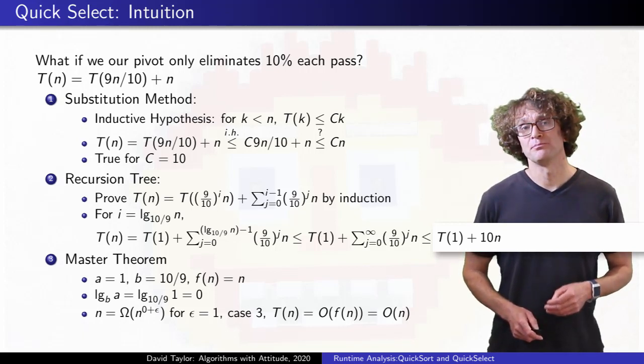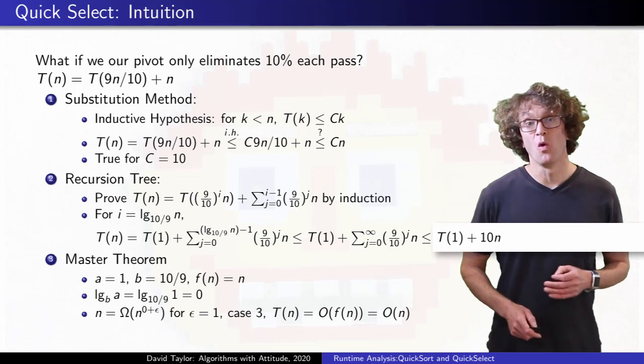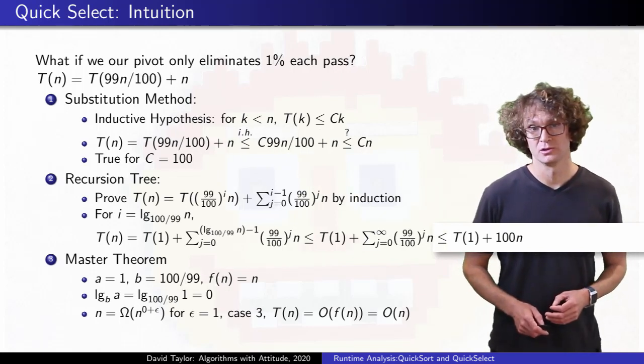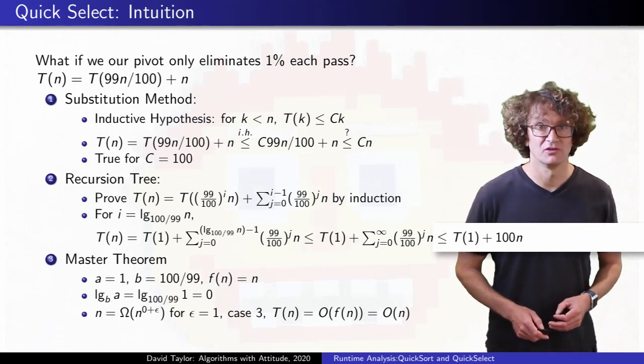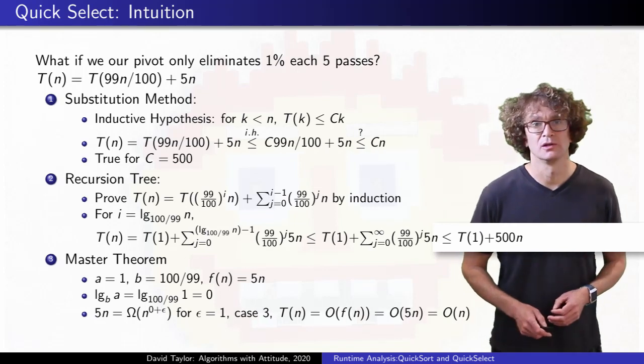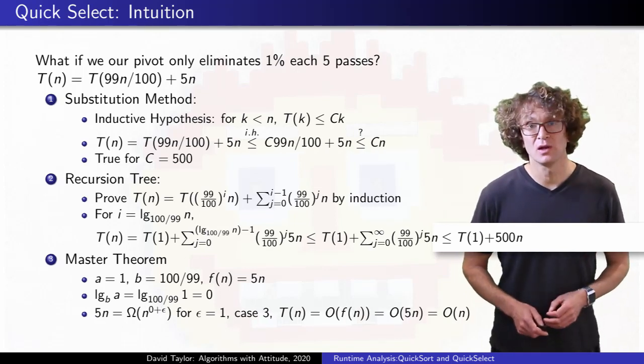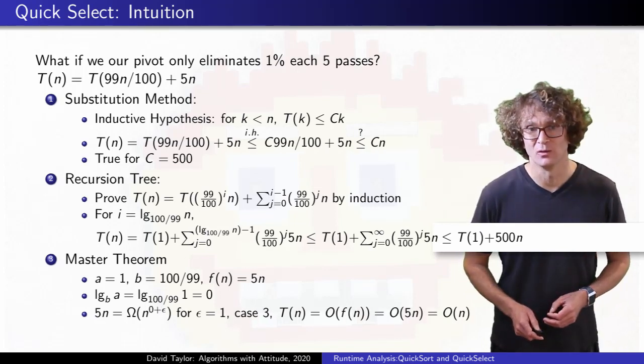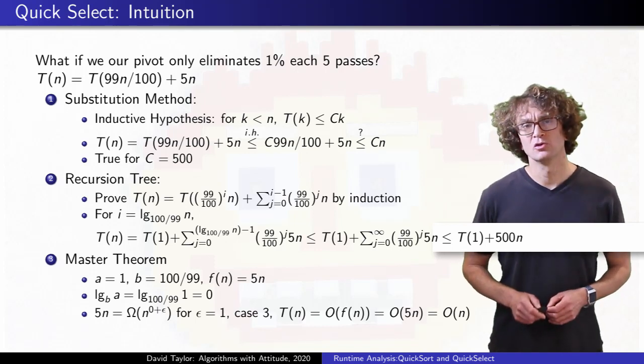Even if you are more pessimistic and imagine that you only get rid of 1% of the set each time you partition, or maybe 1% of the set each 5 times that you partition, you still get a linear runtime, it's just that the constants get worse. Okay, that's a good intuition.